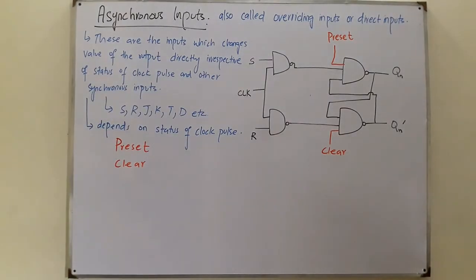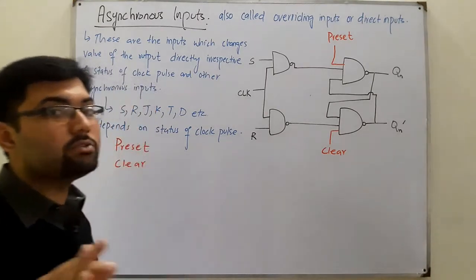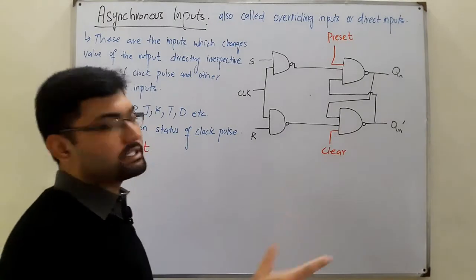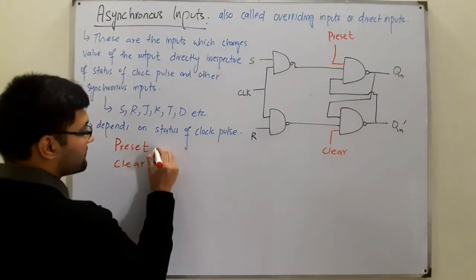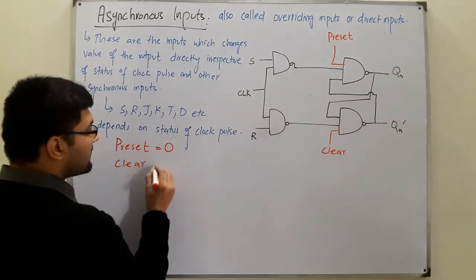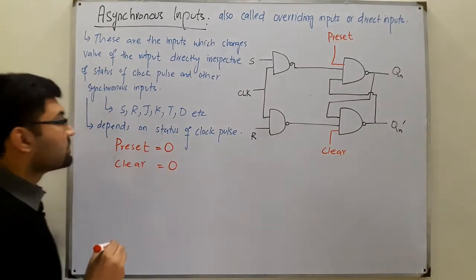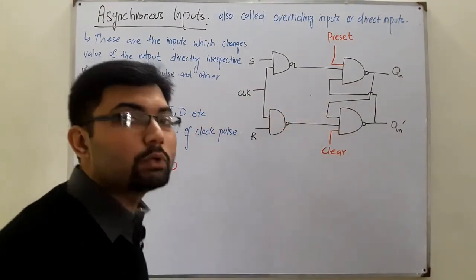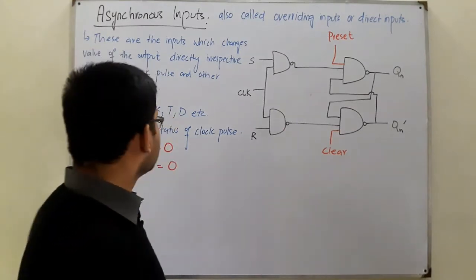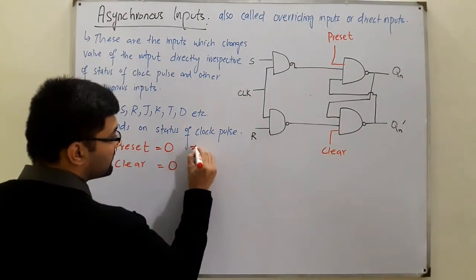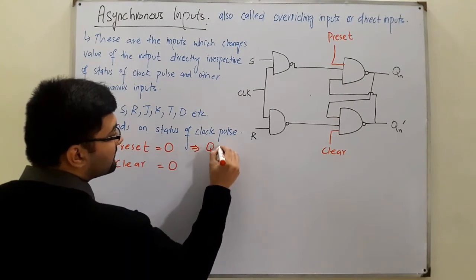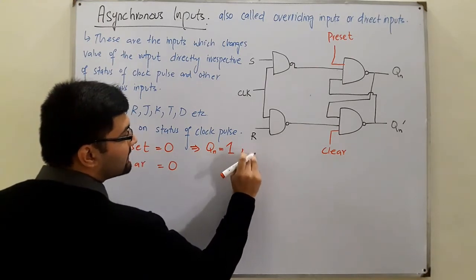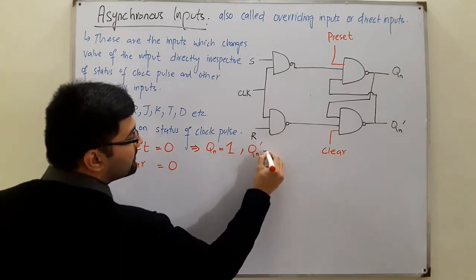These are active low signals. Active low means whenever they are low — which means whenever they are zero — they change the value of the output. So if the preset is zero, something will happen; if the clear is zero, something will happen. Now if the preset is zero, look at this NAND gate — any input being zero makes the output one. So preset equals zero implies Q_n is going to be one.